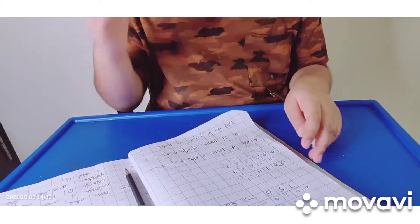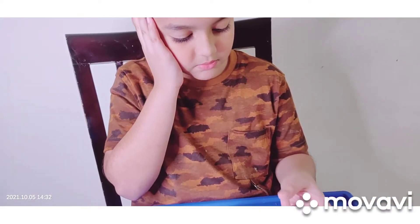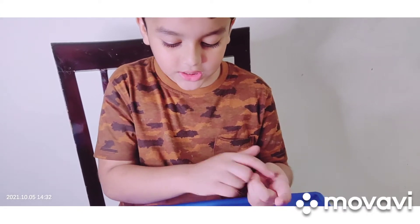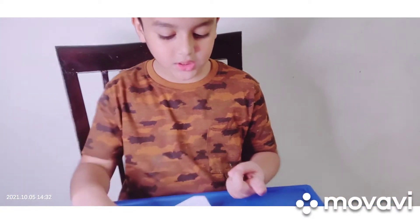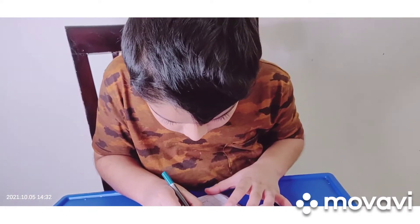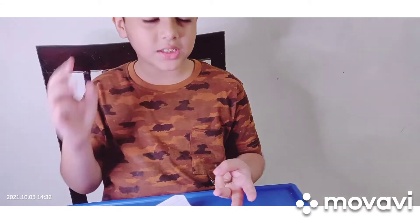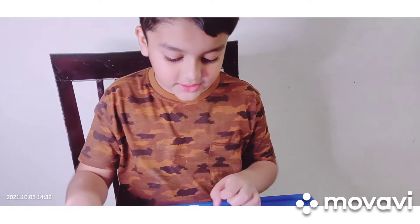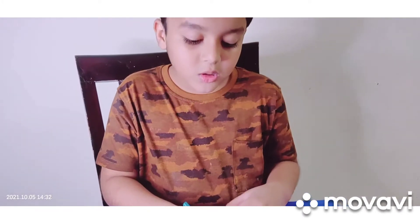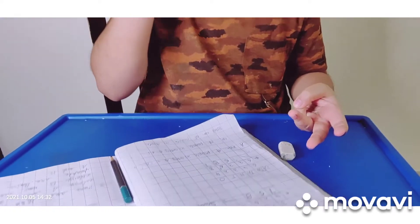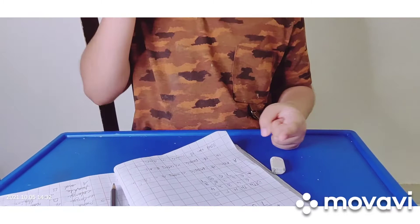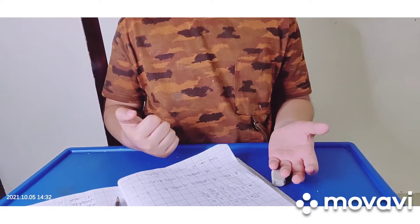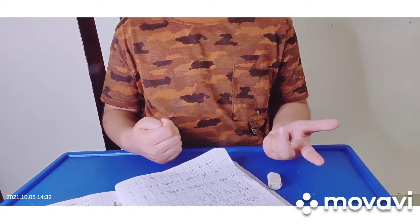4 plus 3: 4 in the mind, 3 in the fingers, 5, 6, 7. 6 plus 2: 6 in the mind, 2 in the fingers, 7, 8. 3 plus 3: 3 in the mind, 3 in the fingers, 4, 5, 6. 4 plus 3: 4 in the mind, 3 in the hands, 5, 6, 7. 6 plus 6: 6 in the mind, 6 in the fingers, 7, 8, 9, 10, 11, 12.